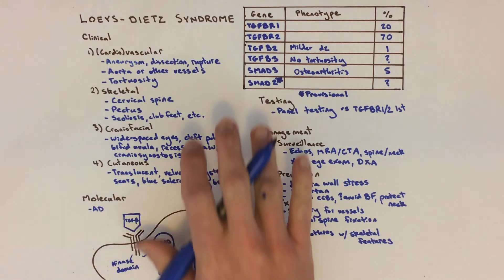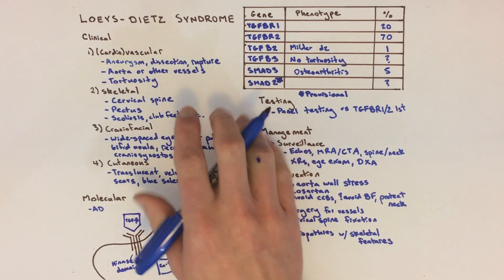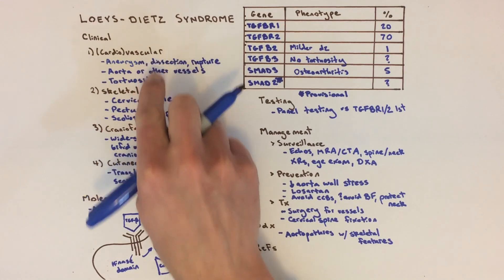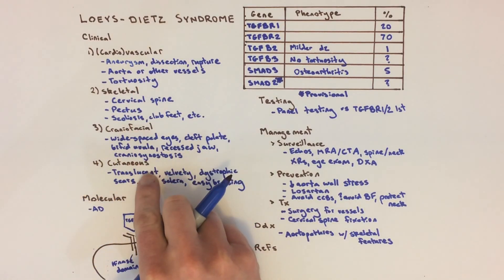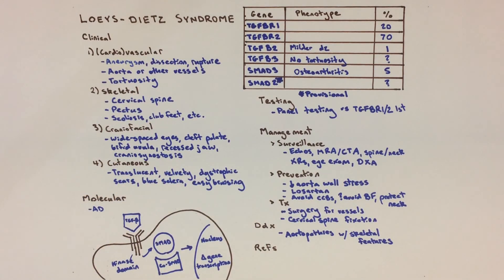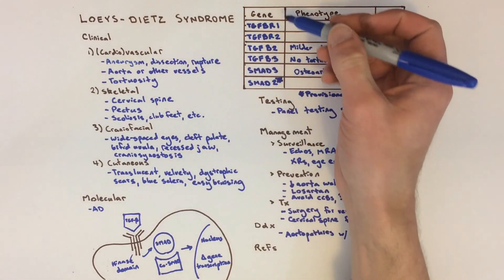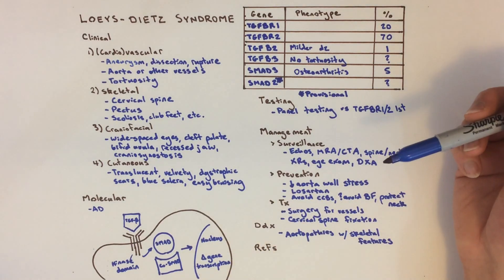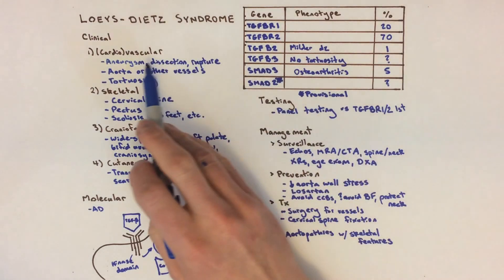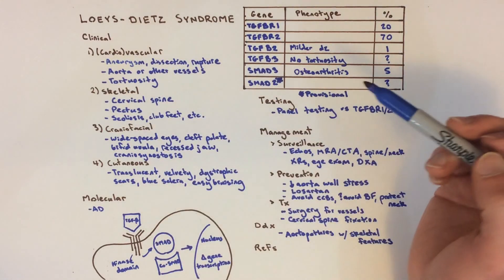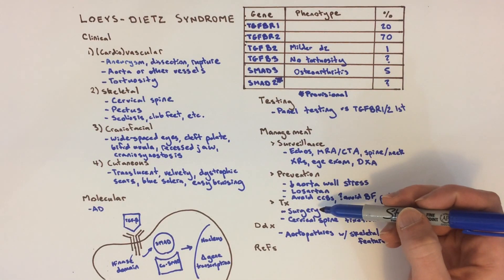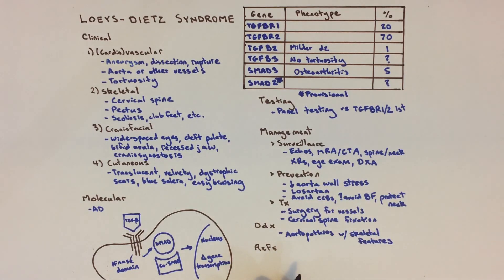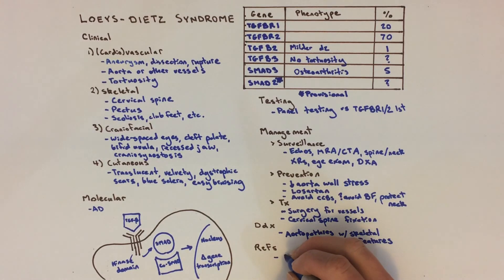To summarize, Loeys-Dietz syndrome is an autosomal dominant connective tissue disorder that primarily involves the vascular, skeletal, craniofacial, and cutaneous tissues. There are several disease genes, all encoding components of the TGF-beta signaling pathway, and mutations lead to hyperactive signaling. The primary cause of morbidity and mortality is vascular dissection and rupture, but both preventive and treatment strategies exist. To learn more, please see the references listed in the info section below.